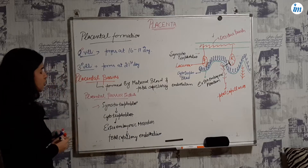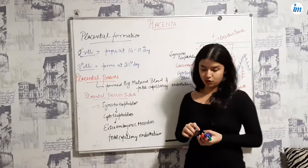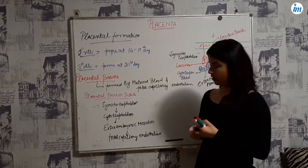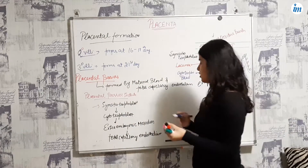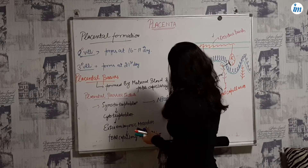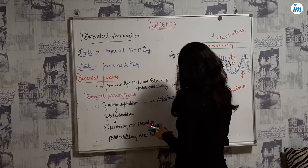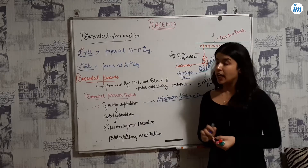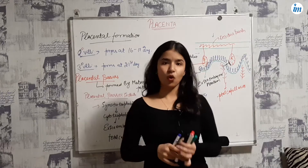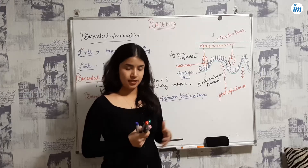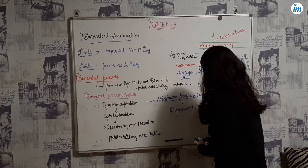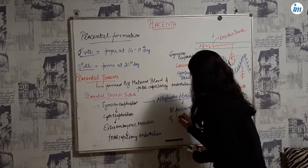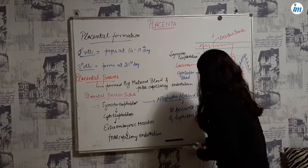The syncytiotrophoblast condenses to form one important structure: the Nitabuch's fibrinoid layer. This layer prevents the invasion of trophoblast into the decidua basalis.